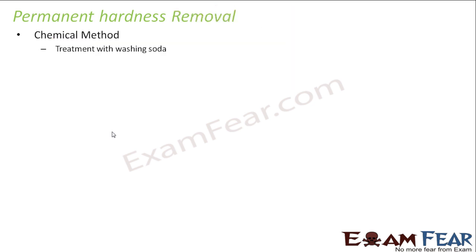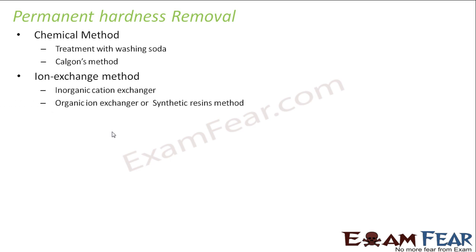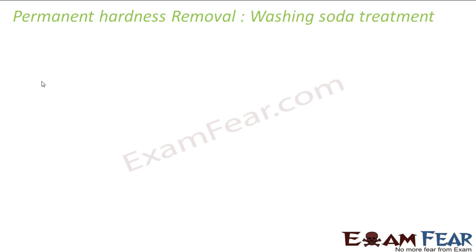We have various methods to remove permanent hardness. The first is the chemical method. In the chemical method, we treat with washing soda or we use Calgon's method. In ion exchange method, we use either inorganic cation exchanger or organic ion exchanger, also called synthetic resin. We will discuss the chemical methods and the ion exchange method.